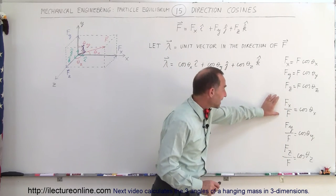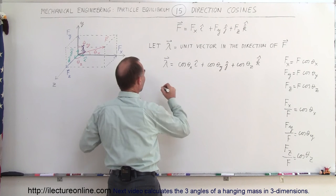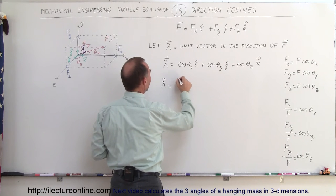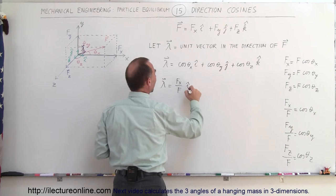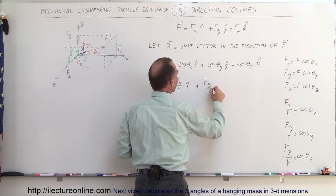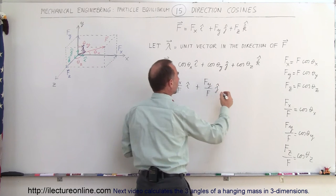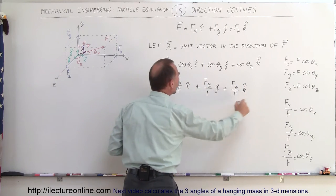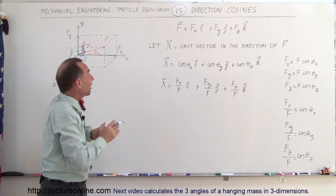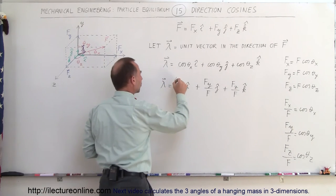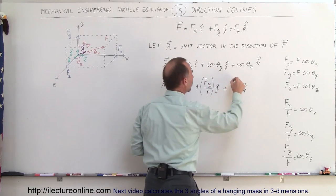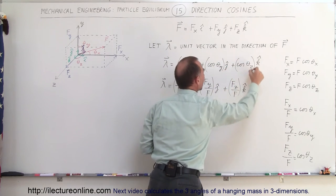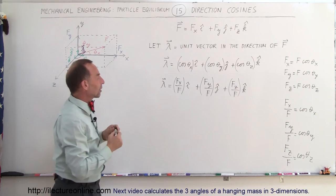What we can do now is take these ratios and plug them into our equation. So the unit vector in the direction of vector f is equal to f sub x divided by f in the i-direction, plus f sub y divided by f in the j-direction, plus f sub z divided by f in the k-direction. This represents the unit vector in the direction of the vector. These ratios are what we call the direction cosines.